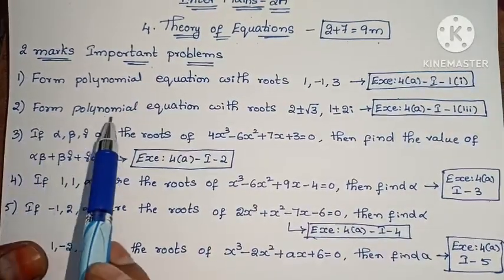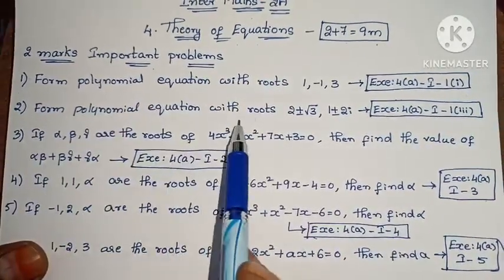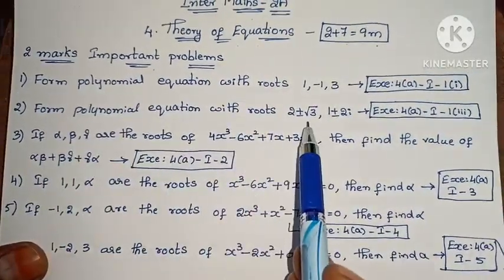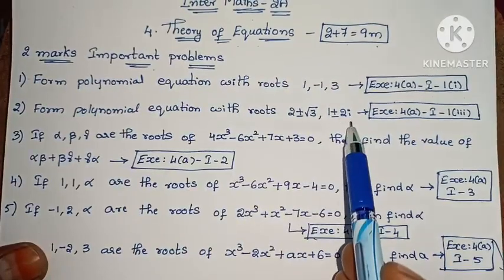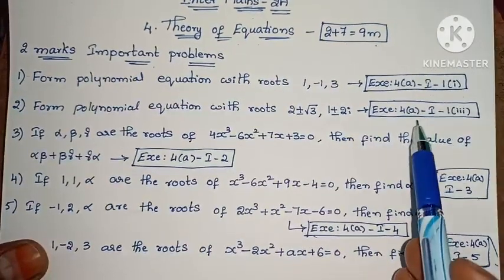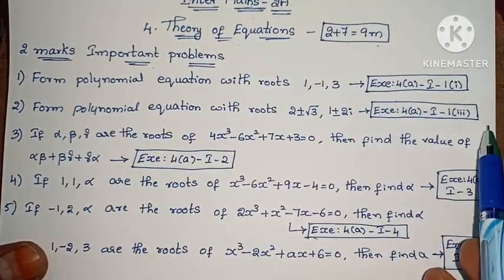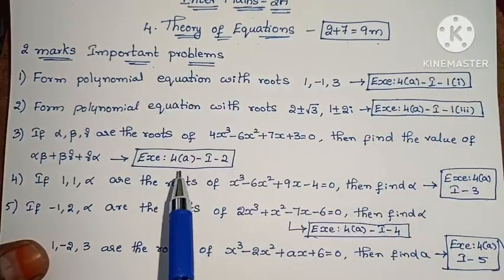Next, form a polynomial equation with roots 2 plus or minus root 3, and 1 plus or minus 2i. Exercise 4A, first Roman numeral, third one.